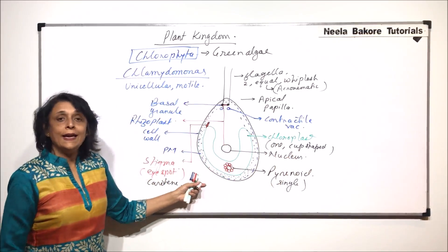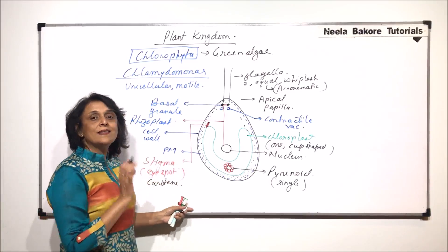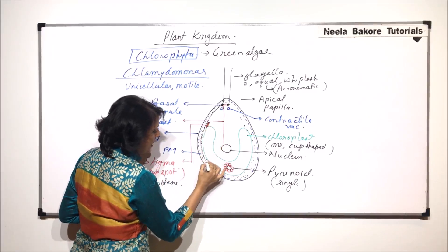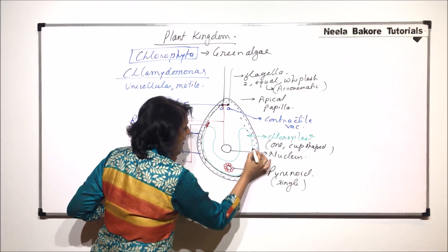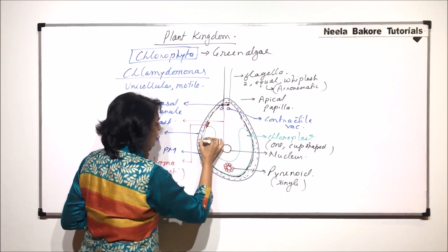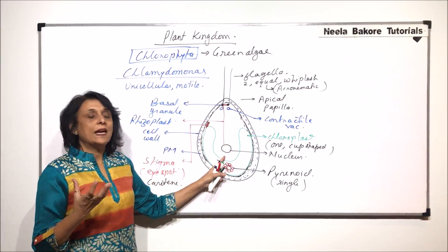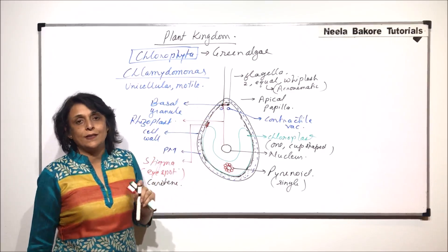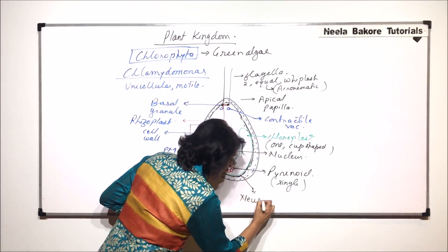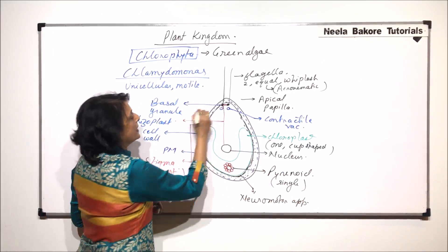Now there is one important thing and that is called the neuromotor apparatus. The neuromotor apparatus includes the chloroplast, the centrally placed cytoplasm, nucleus, rhizoplast, basal granules, all these things. This structure is called the neuromotor apparatus which includes the flagellar structure also.